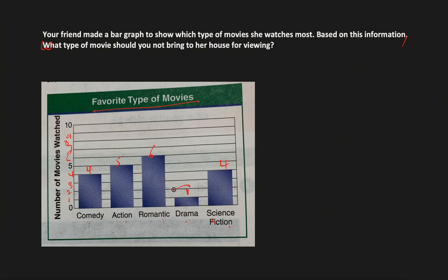Clearly, she likes drama type of movie the least given that she has watched other types of movies a lot compared to drama. The question says based on this information, what type of movie should you not bring to her house for viewing? Since it's clear that she doesn't like drama movies, you shouldn't bring any movie that is of type drama to her house for viewing. So the answer for this is drama movie.